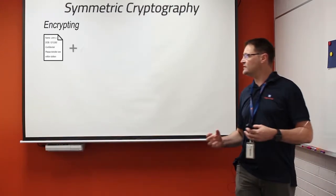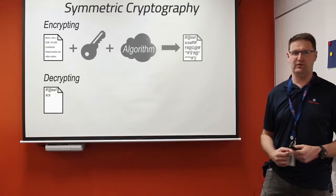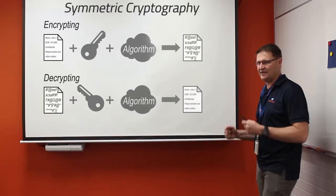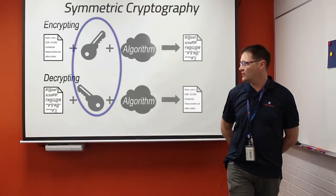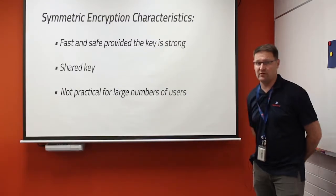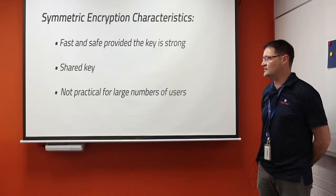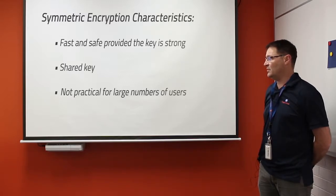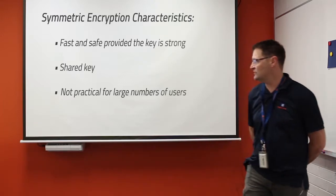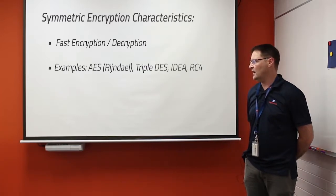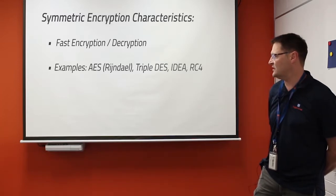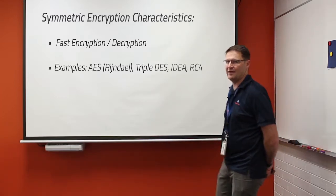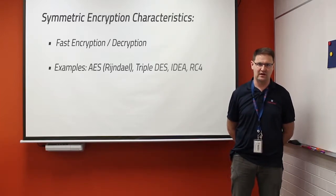Symmetric key cryptography uses the same key at both ends of an encryption transaction — the key that encrypts the data is also used to decrypt it. The characteristics are very high performance compared to asymmetric cryptography, but key management is shared, meaning you have the same key at both ends, and getting that key to the other end is one of the biggest issues. It's not practical for a large number of users, but it's useful for fast encryption and decryption. Examples include AES, Triple DES, IDEA, and RC4 — AES, the Advanced Encryption Standard ratified by NIST, is probably the most used now.